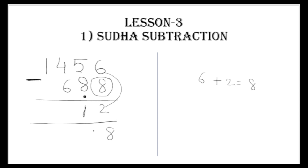Again, we have taken the complement here, so we give Sudha to the next number. Six plus one is seven. Seven is smaller than the upper number, so we take the tenth complement of seven, which is three. Three plus four equals seven. Again we have taken the complement, so we give Sudha here.